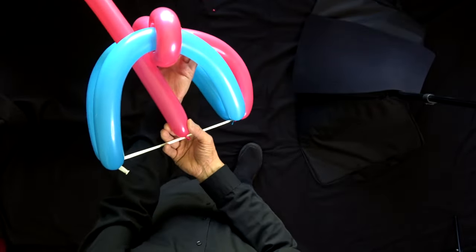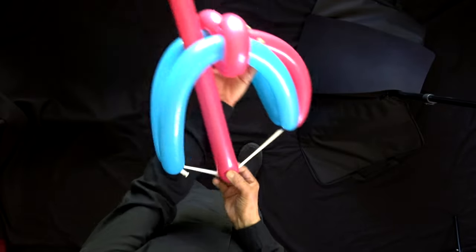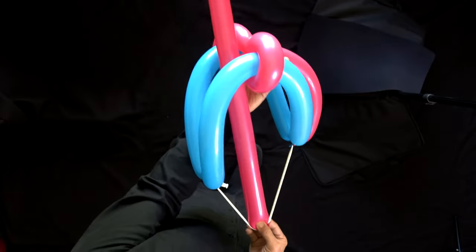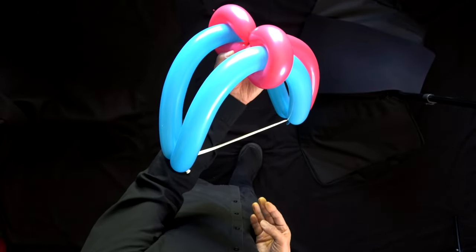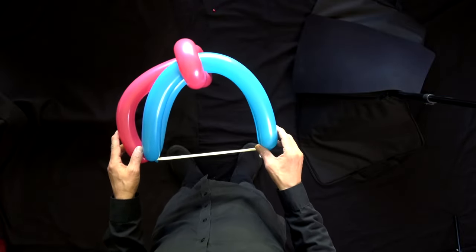Hold both sides of the balloon here around the bow. Flex the bow. Let go. You have a cool bow and arrow.